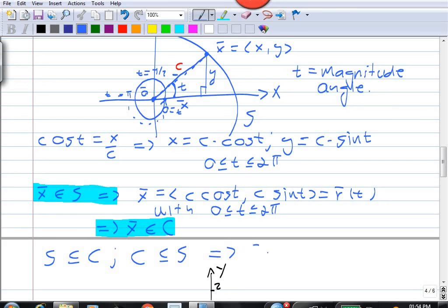C is a subset of S. So, that means our curve C is equal to S. In other words, the curve C,